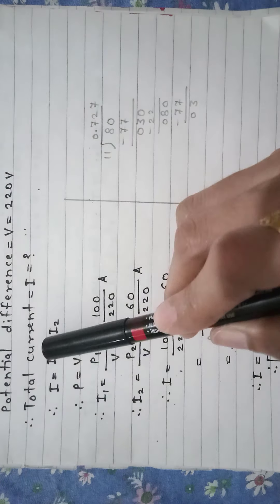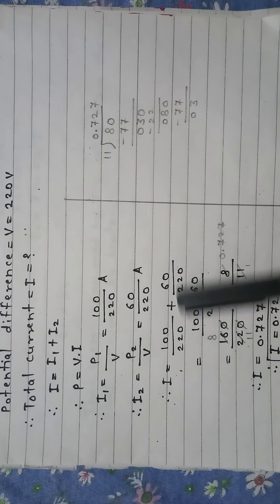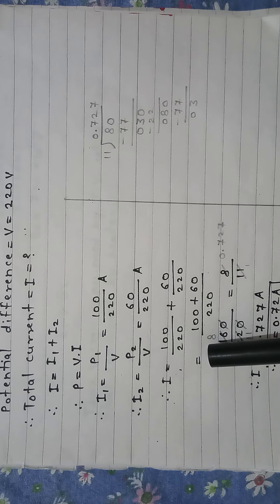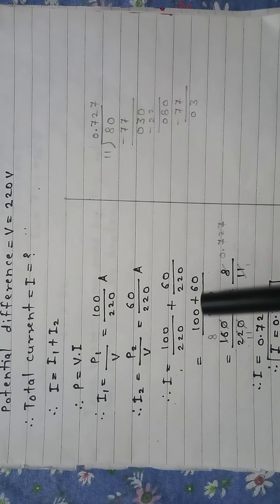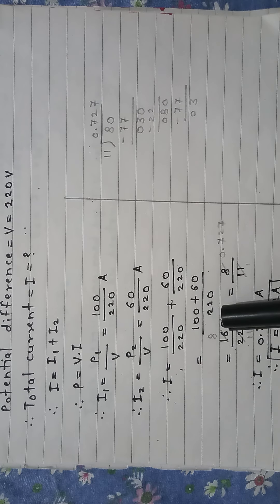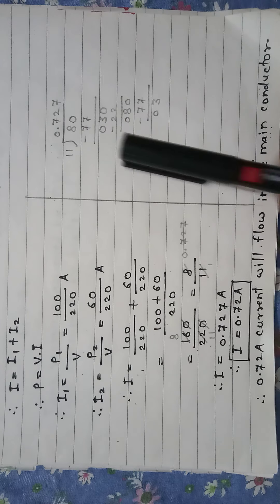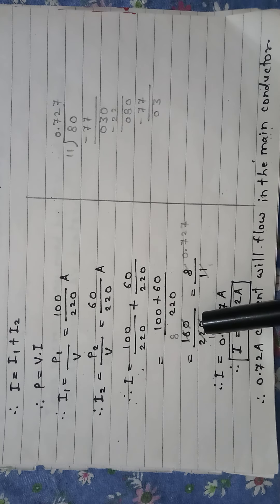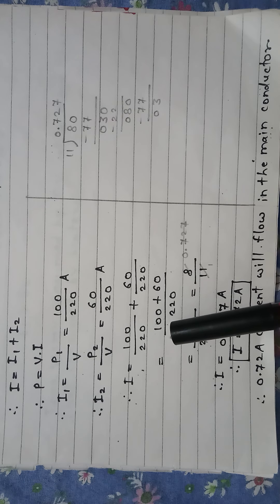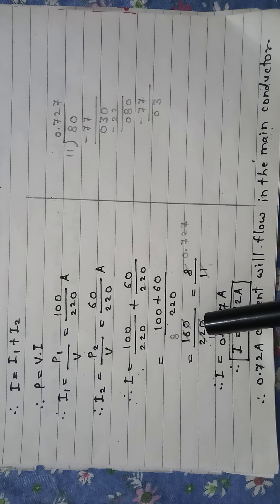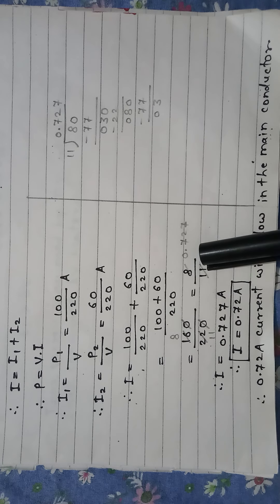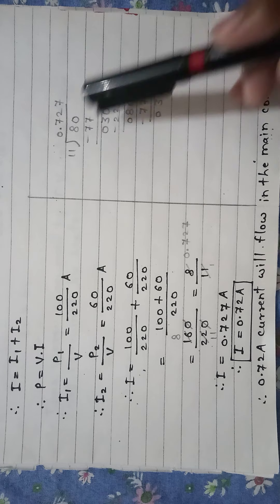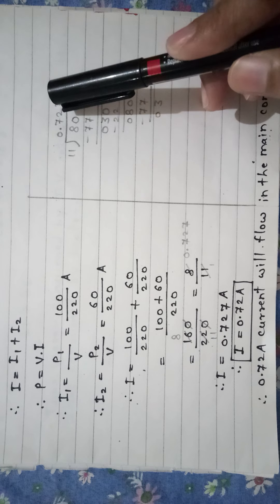Now I equals I1 plus I2. Since both denominators are the same, we add the numerators: 100 plus 60 upon 220, that is equal to 160 upon 220. The zeros cancel, giving 16 upon 22. Dividing both by 2, we get 8 upon 11. So 8 divided by 11 — after division we get the answer 0.727.